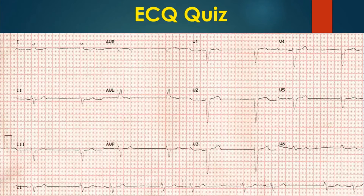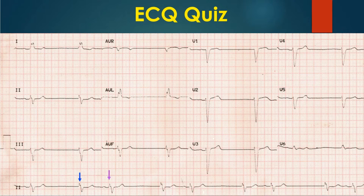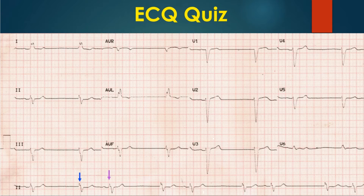What are the salient features on the ECG? What is the mechanism? Lead 1 and AVL shows notched QRS complexes suggestive of left bundle branch block. The PR interval for the sinus beat is 200 ms, at the upper limit.